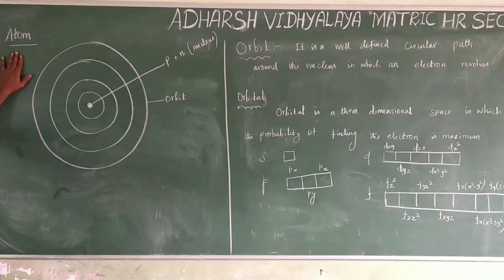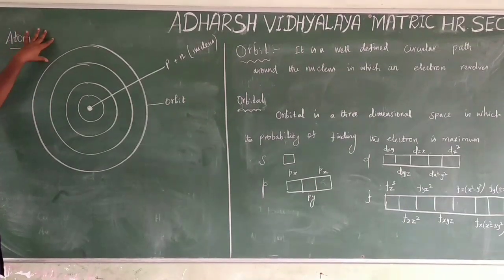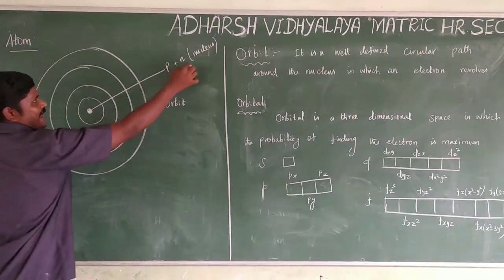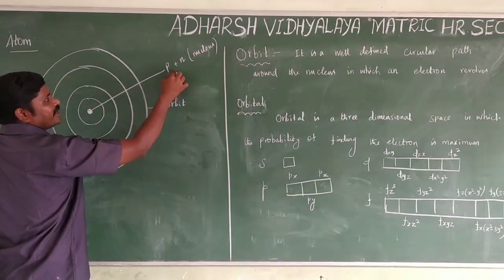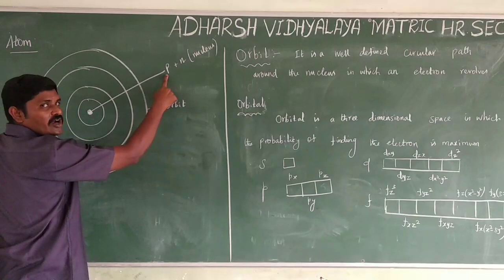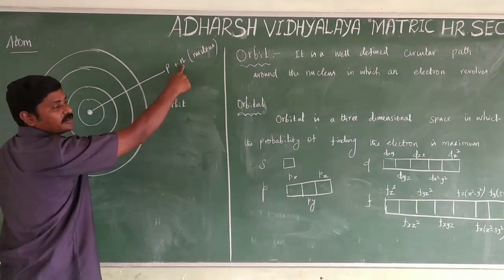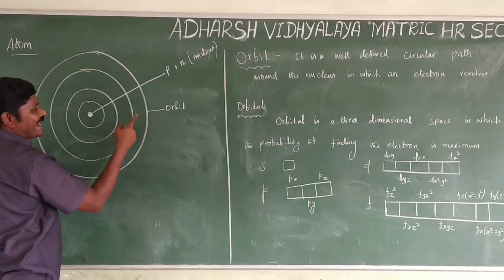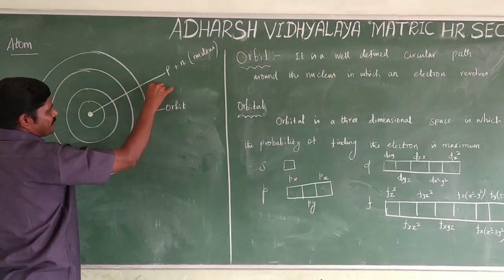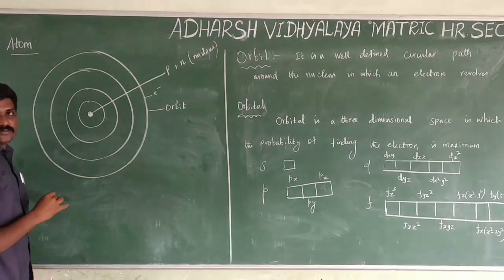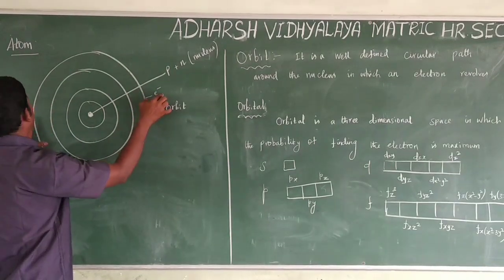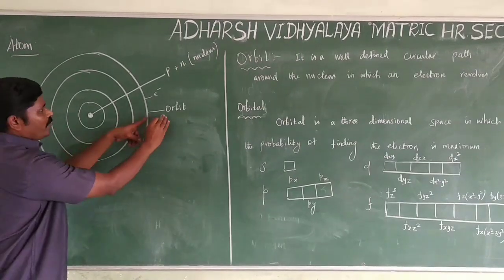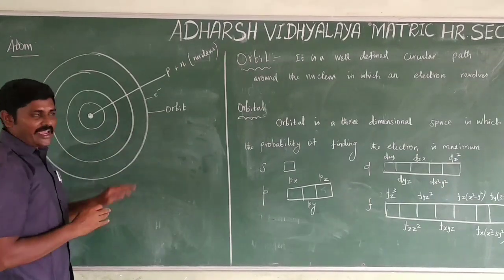The atom consists of a positively charged nucleus composed of protons and neutrons, surrounded by negatively charged electrons. Define orbit: an orbit is a well-defined circular path around the nucleus in which an electron revolves.